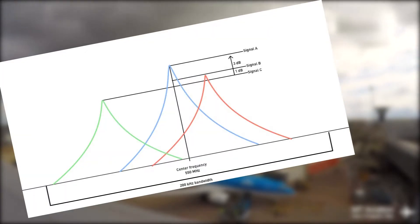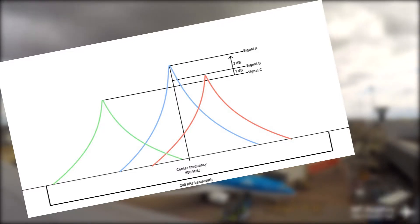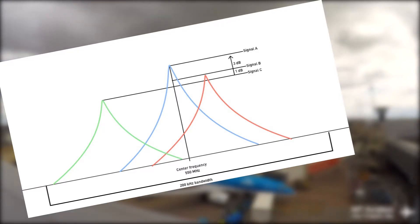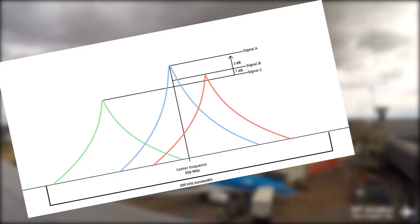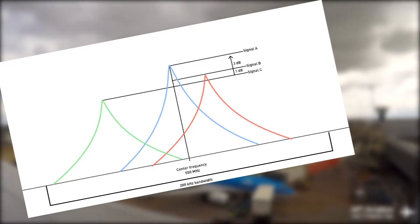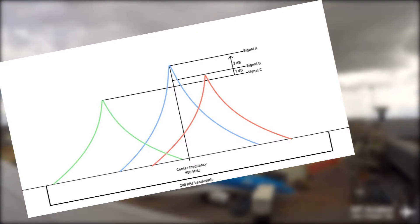FM has one fatal flaw in its demodulation: the capture effect. In FM demodulation, the receiver tracks the modulated frequency shift of the desired carrier, while discriminating against any other signal, since it can only follow the deviation of one signal at a time.